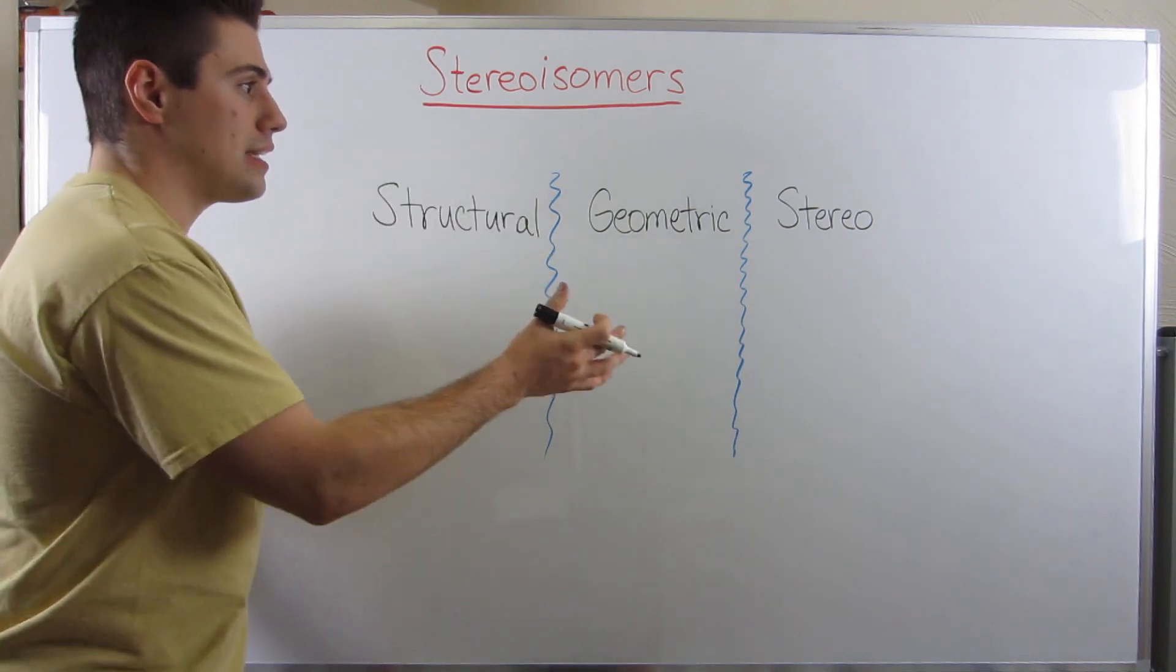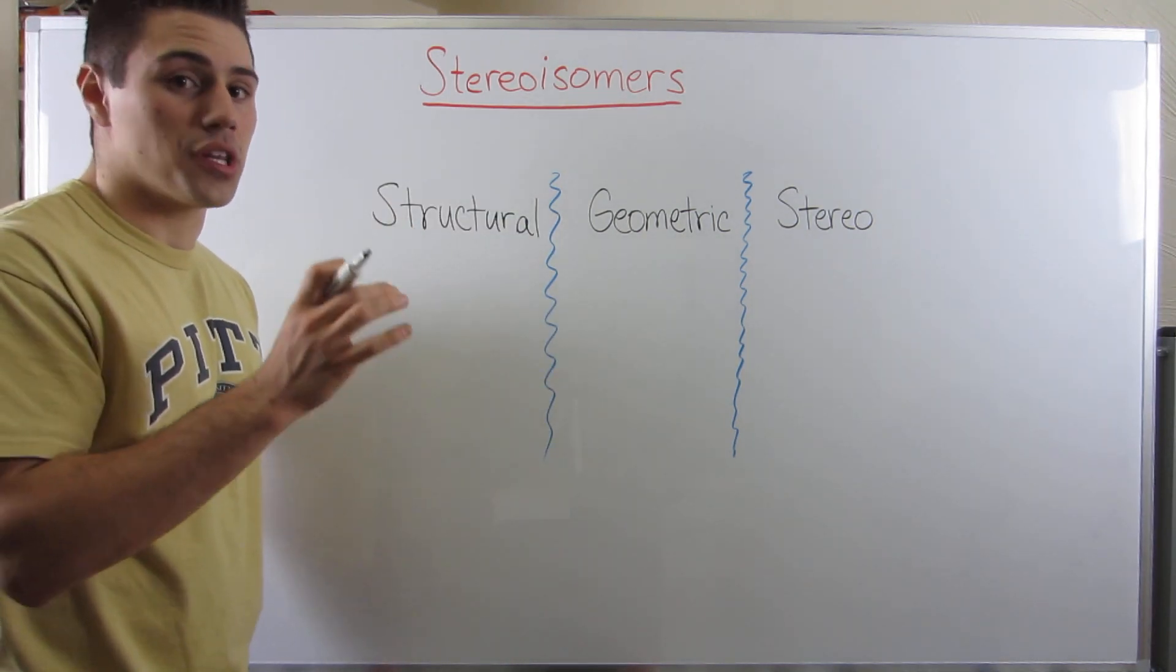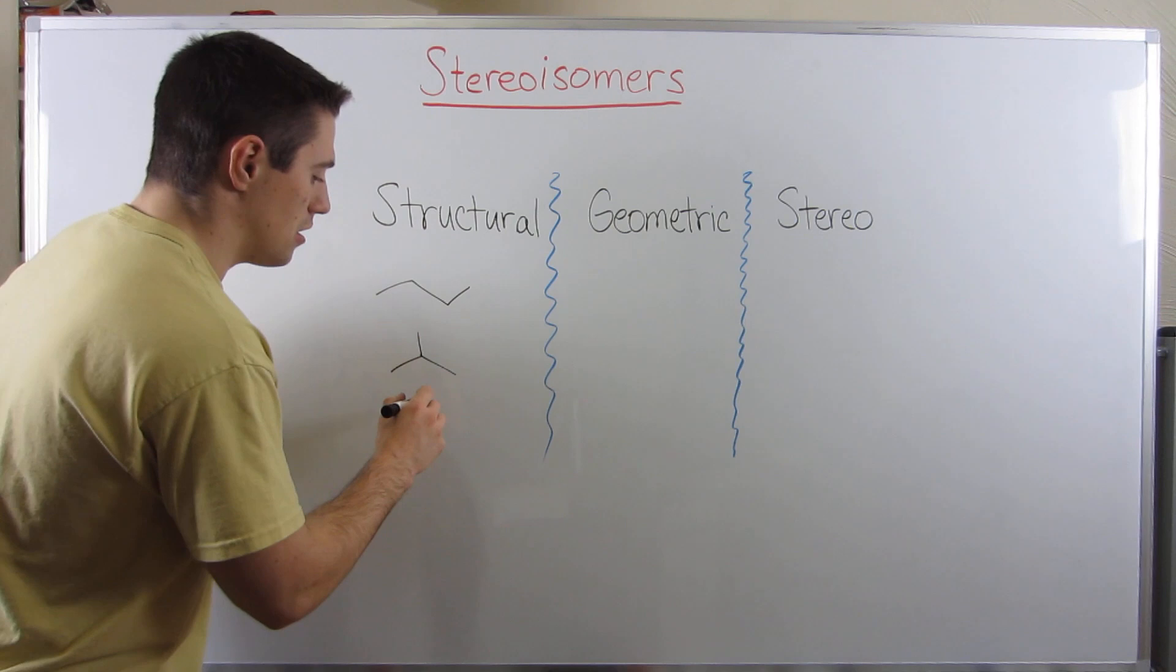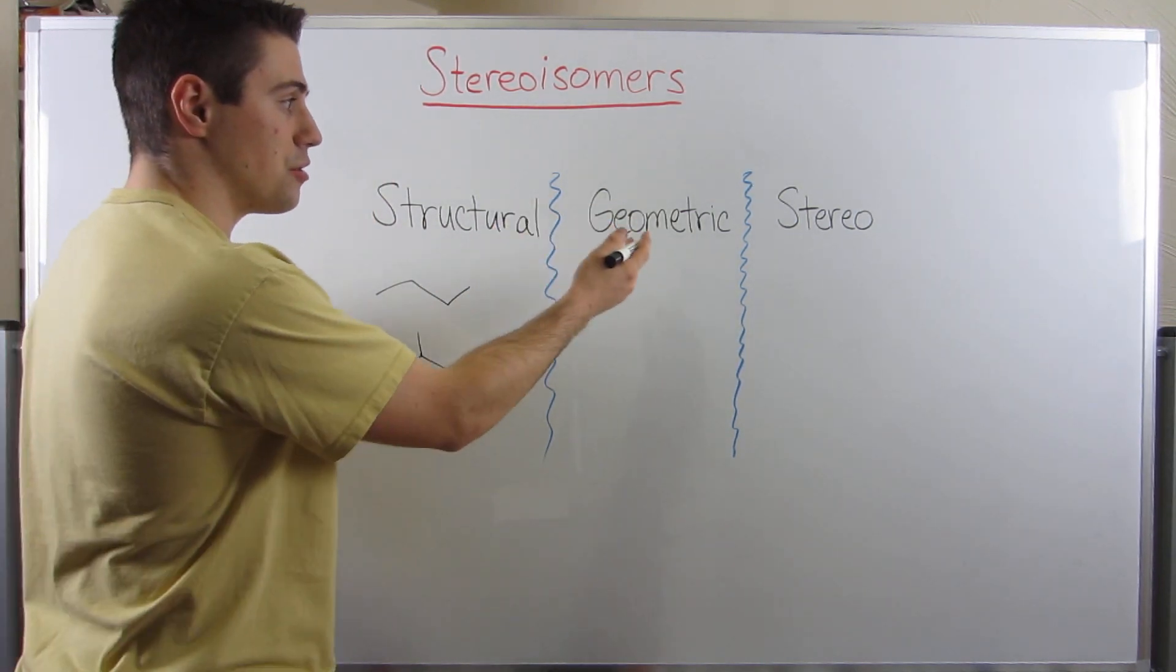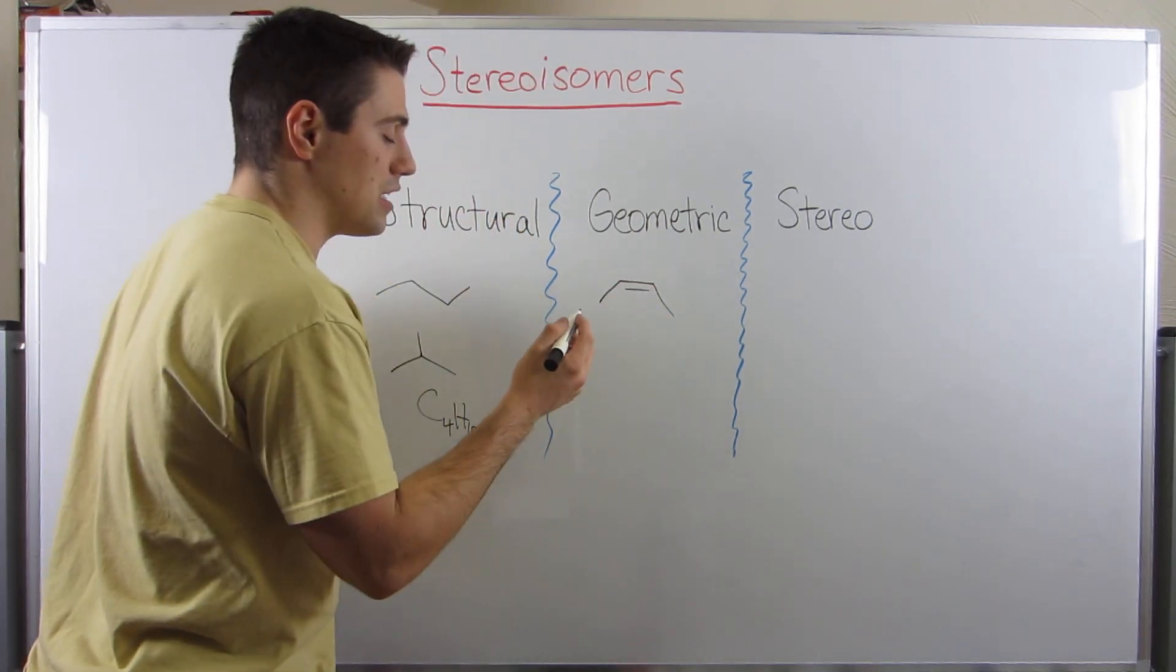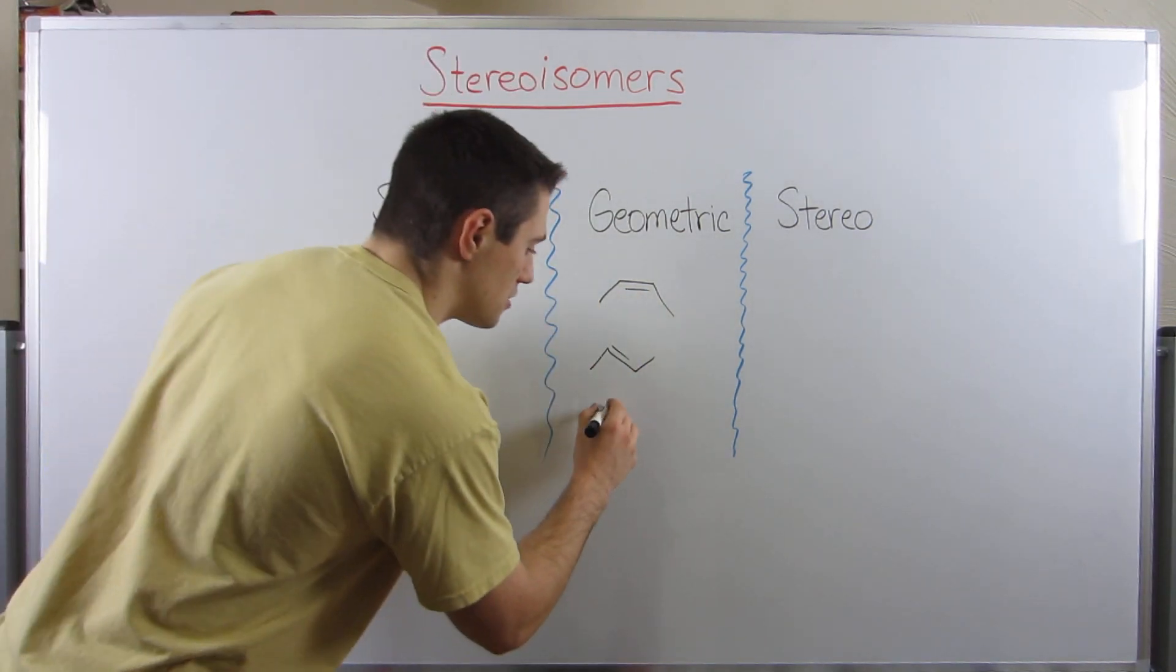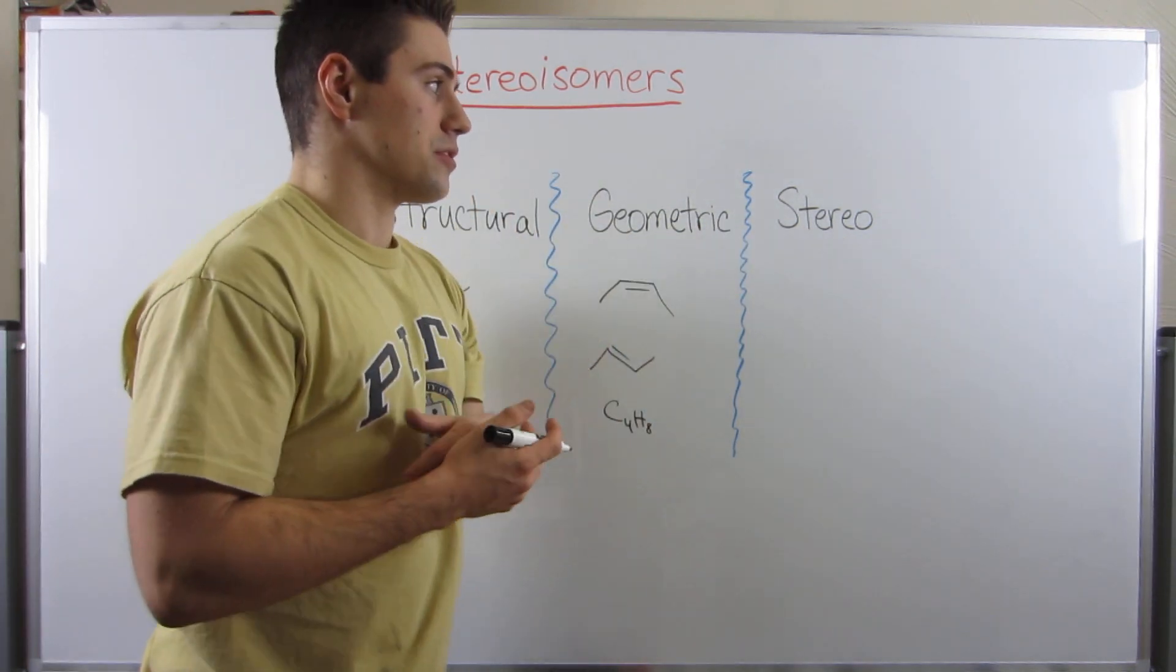Just a quick recap: structural isomers are the types of isomers that differ in their atom-to-atom connections. Think butane and isobutane - between the two, the molecular formula stays the same, C4H10. Geometric isomers - think 2-butene with the cis double bond, 2-butene with the trans double bond, same molecular formula C4H8. Now let's get over to stereoisomers.